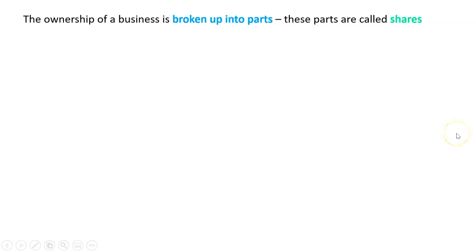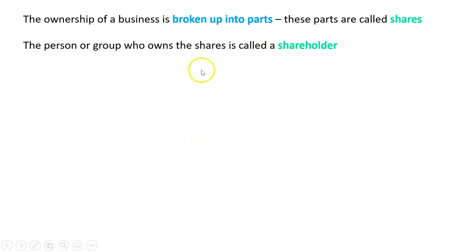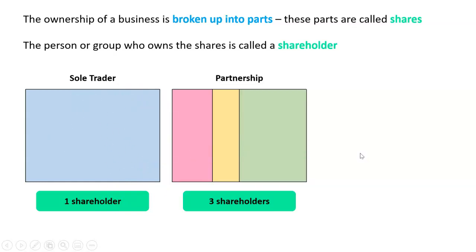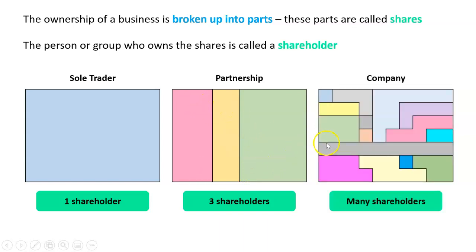Just a recap — we've done this in another topic, but to summarize: the ownership of a business is broken up into parts, and each of these parts are called shares. The person or group who owns the shares is called a shareholder. A sole trader has one share owned by one person — that's 100% shareholding. A partnership can be up to 20 people and doesn't have to be equal shares. We can see three people own the shares here, so there are three shareholders with unequal shares. With a company, particularly a public company on the stock exchange, it can have billions of shares, each block owned by a different group or individual.